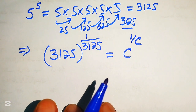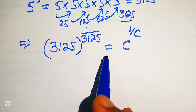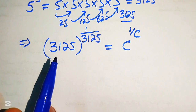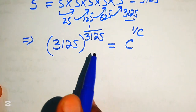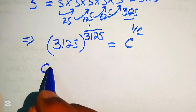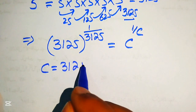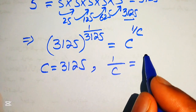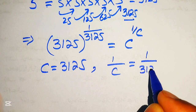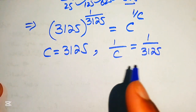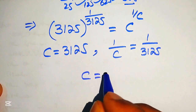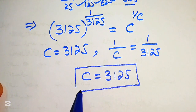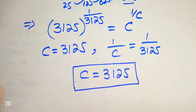On both sides the base and its exponent are reciprocals of each other. Comparing the bases gives c equals 3125, and comparing the exponents gives 1 over c equals 1 over 3125, which also gives c equals 3125. So the final value of c is 3125.